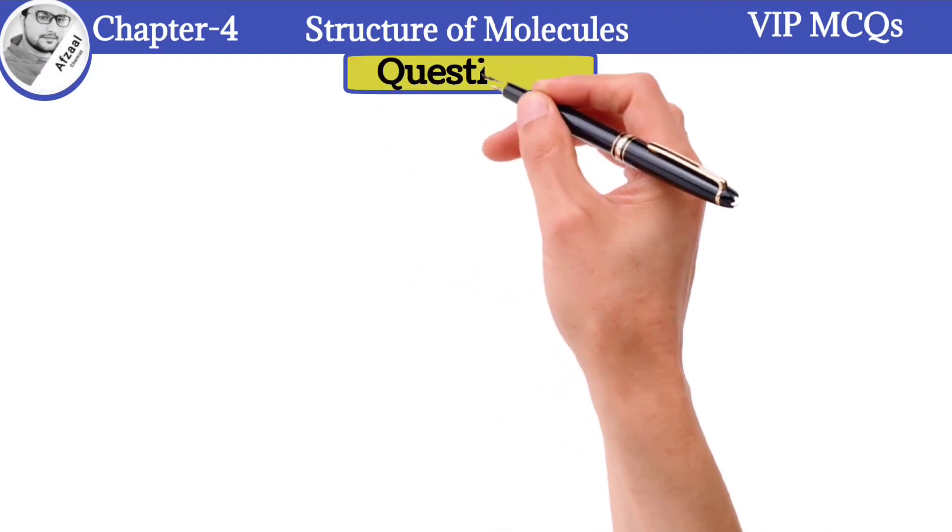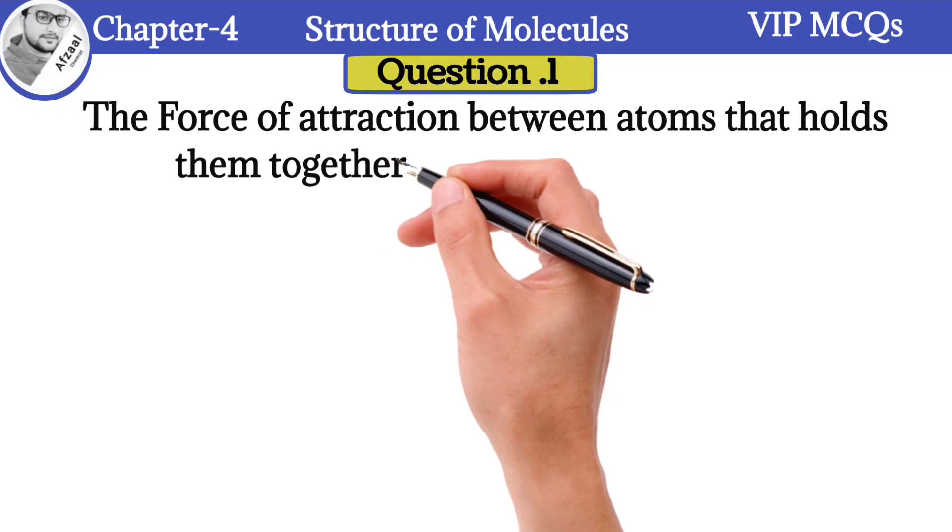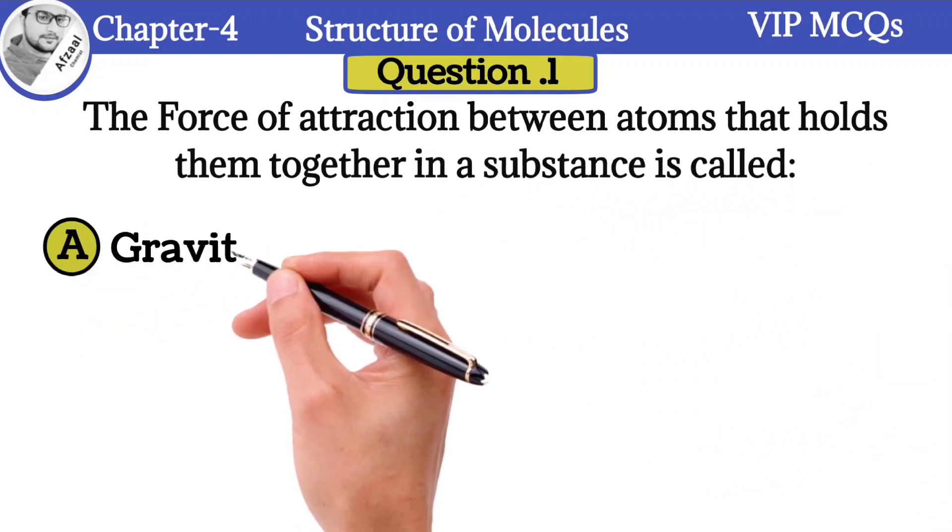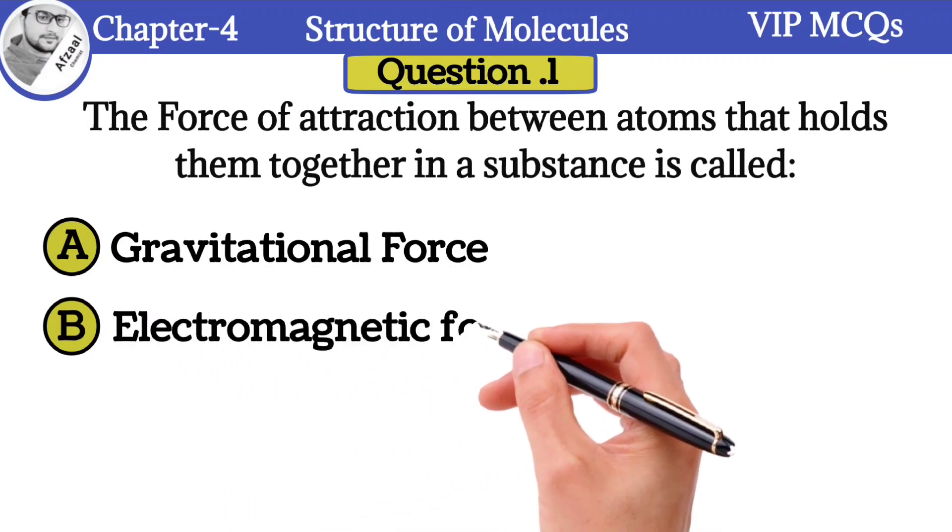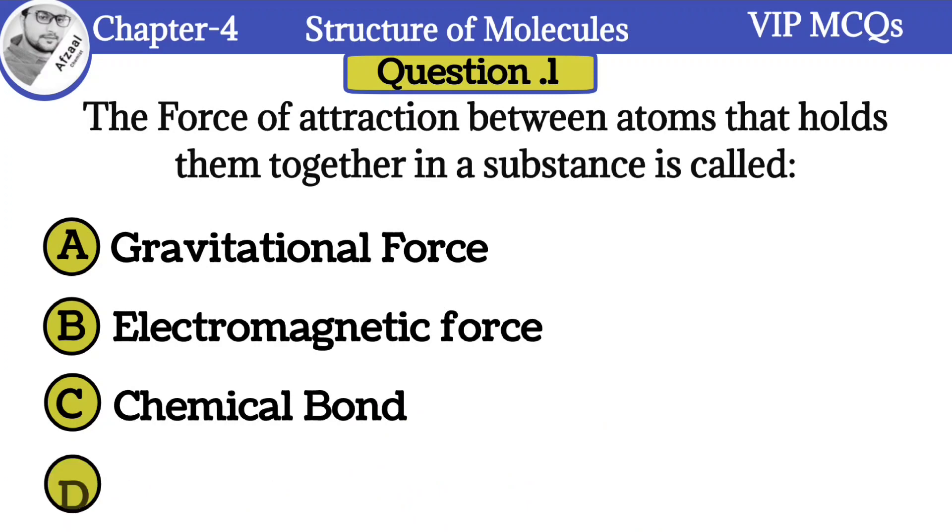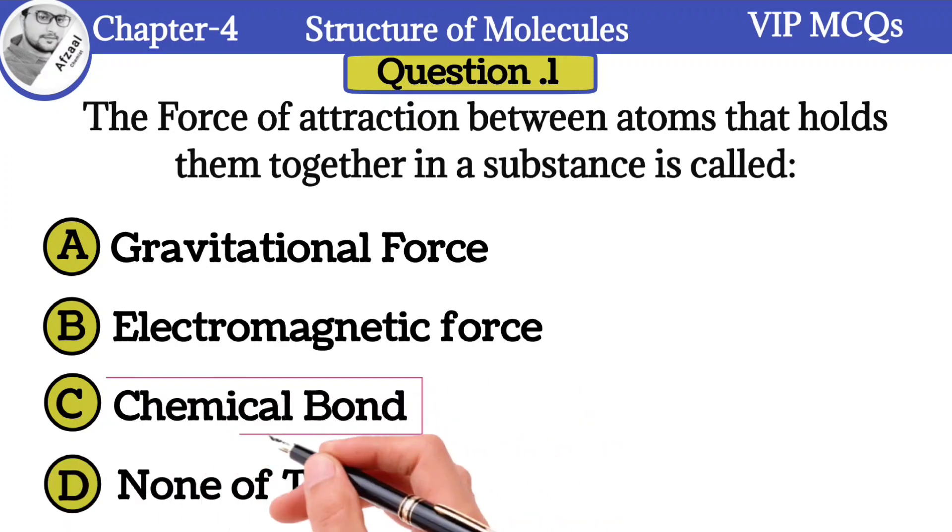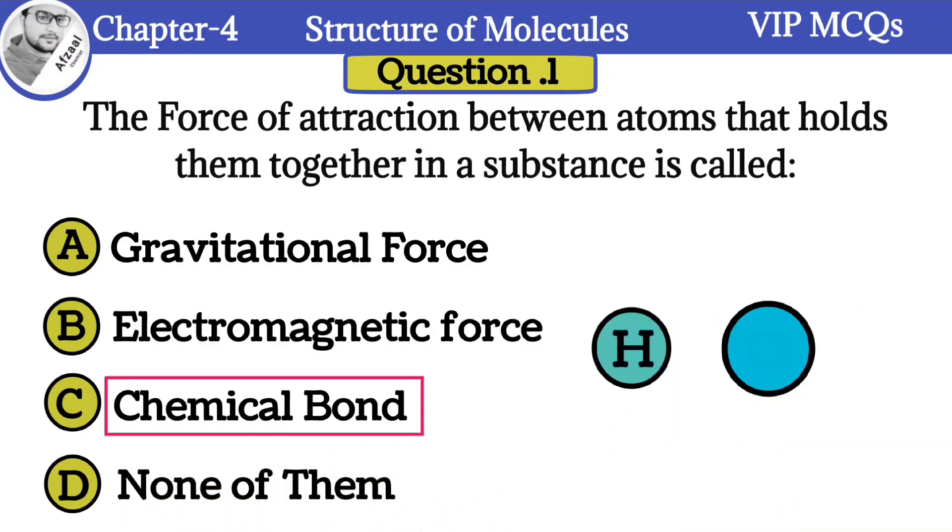Our first question is: The force of attraction between atoms that holds them together in a substance is called: A) Gravitational force, B) Electromagnetic force, C) Chemical bond, D) None of them. The correct option is chemical bond. For example, in hydrogen chloride, the force of attraction that holds hydrogen and chlorine atoms is known as chemical bond.